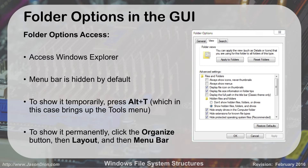For folder options in the GUI, go to Windows Explorer. In Windows 7 and Vista, the menu bar is hidden by default — press Alt+T to show it, then go to Options to see folder options. To show it permanently, go to Organize > Layout > Menu Bar. Under folder options you can control: always show icons and never show thumbnails, whether to display file extensions like .doc or .txt, whether to show hidden files, and whether to hide protected system files. For most users, you'll want to hide extensions and system files, but technicians may need to see that information.